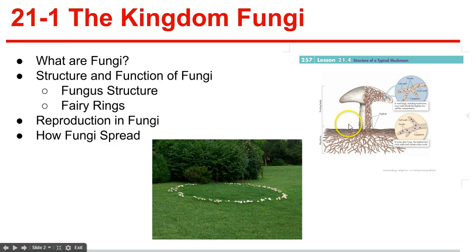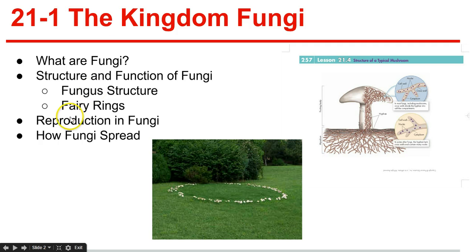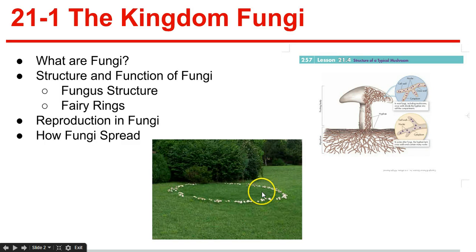What we recognize as the mushroom is actually the fruiting body of the fungi. The fruiting body is a reproductive structure growing from the mycelium in the soil beneath it. Fairy rings form when the soil's nutrients become depleted and the mushrooms only grow at the outer edges of the mycelium, which results in the ring we see.